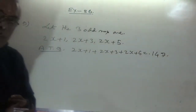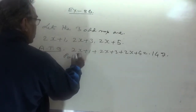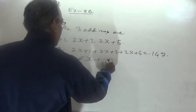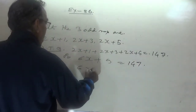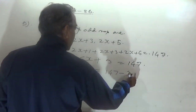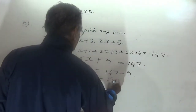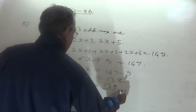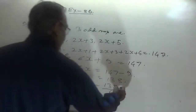Solving the equation: 6x + 9 = 147. Therefore 6x = 147 - 9 = 138. So x = 138 ÷ 6 = 23.